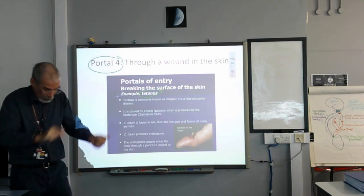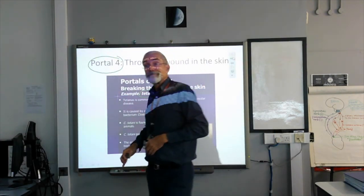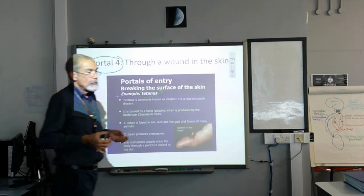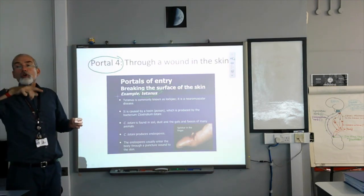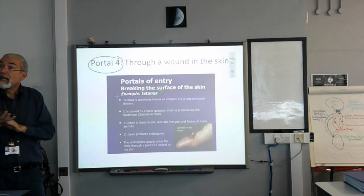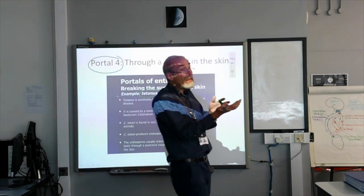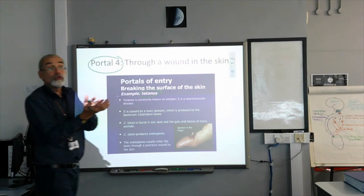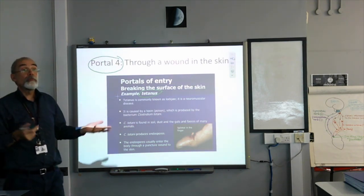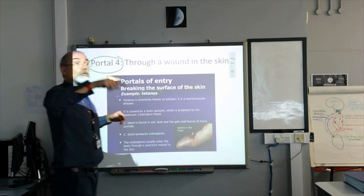Tetanus is a bacteria that you find in soil — a natural bacteria, happy in soil. You also find it in dog species. It's not the actual tetanus bacteria itself but what we call the endospores — the little floating bodies from the bacteria — that cause the problem. If you get a cut and those little endospores from the bacteria get into that cut, you have got a major problem.